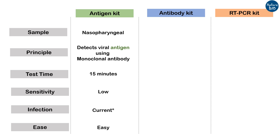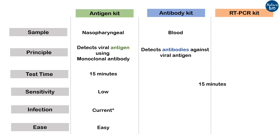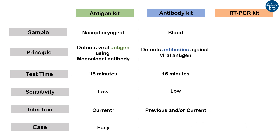Rapid antibody tests are done with the patient's blood sample. They detect the antibodies the patient has developed against the virus. Similar to antigen kits, results are available in 15 minutes and sensitivity is lower than RT-PCR. The antibody test shows that the person has developed antibodies against the virus and may be currently or previously infected. As it is also a chip-based method, minimal skills are required to conduct the test.